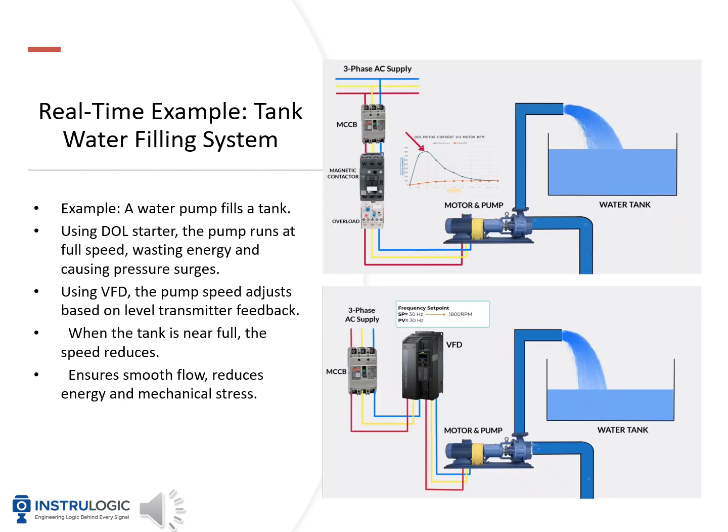Let's see a real-world example of how a VFD improves efficiency — a tank water filling system. In the first diagram, the pump is controlled by a DOL starter and runs at full speed all the time, even when the tank is almost full, wasting energy and causing pressure surges that can damage pipes and valves. In the second diagram, the pump is controlled by a VFD. The pump speed adjusts based on level transmitter feedback — when the tank is nearly full, the VFD reduces the speed, ensuring smooth flow. This saves energy, reduces mechanical stress, and prevents water hammer or pressure shocks in the system.